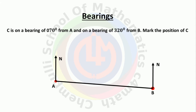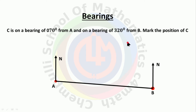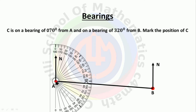Next question: C is on a bearing of 70 degrees from A, and on a bearing of 320 degrees from B. Mark the position of C. The 70-degree angle is at A, and the 320-degree angle is at B. First, at A, make a 70-degree angle using a protractor.